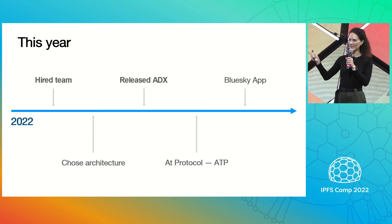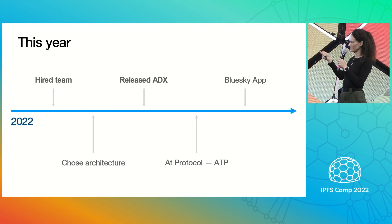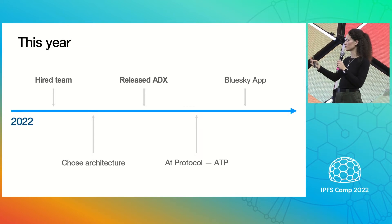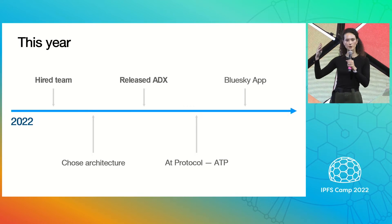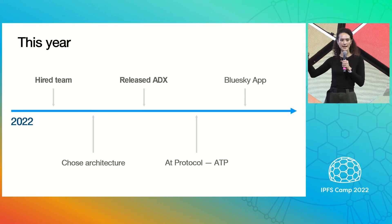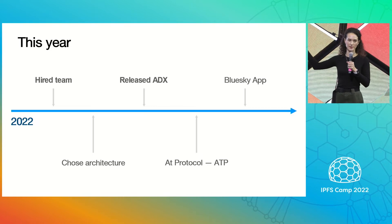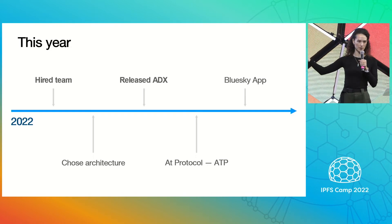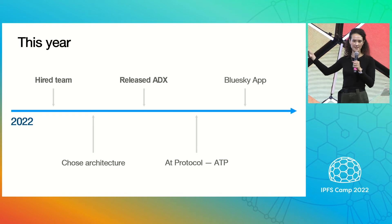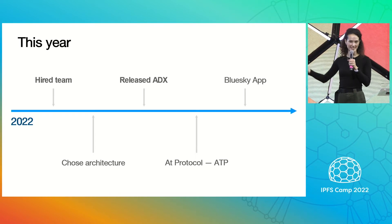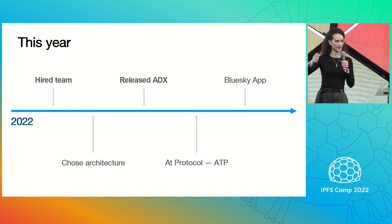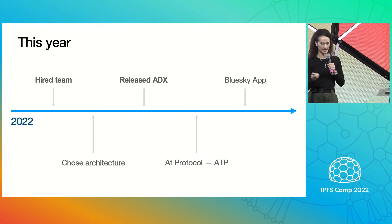So this year, I hired a team, and then we chose the architecture and released an early prototype called ADX, the Authenticated Data Experiment. We have since renamed this to the AT Protocol, or the Authenticated Transfer Protocol, or ATP. And we announced last week that we are building an app.